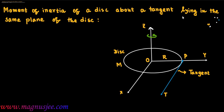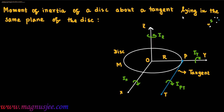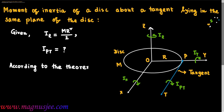If the disc rotates about the z-axis, it will have moment of inertia Iz. If the disc rotates about the x and y-axis, the moment of inertia will be Ix and Iy. If the disc rotates about the axis PT, the moment of inertia will be I_pt. According to the given information, Iz equals MR²/2, which is the moment of inertia of the disc about the z-axis passing through its center of mass and perpendicular to the plane of the disc. Now we have to find I_pt.